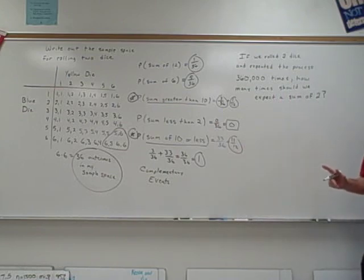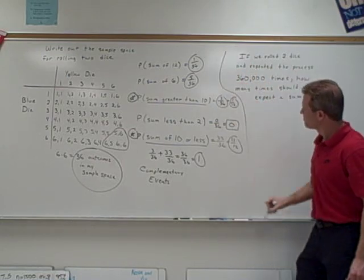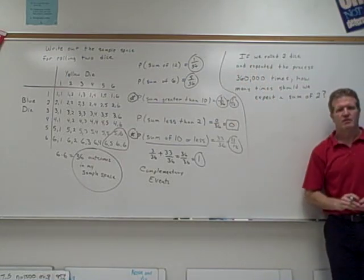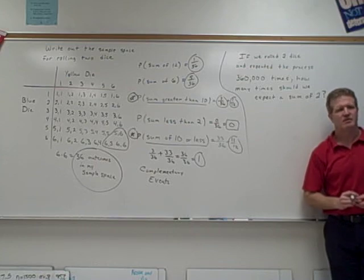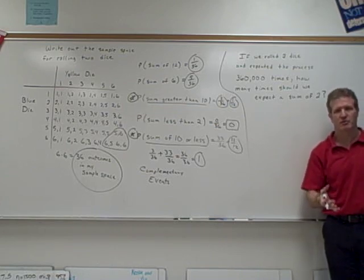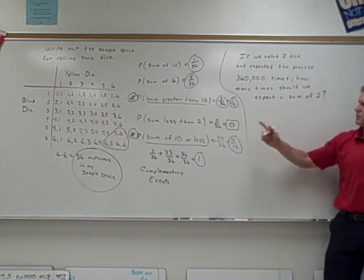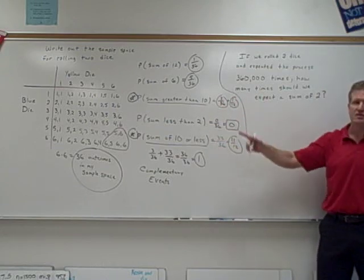All right. Last question I want to put on this video right here. If we rolled two dice and repeated the process 360,000 times, it would take you a long time with it. How many times should we expect to get a sum of two? Now, there's this law called the law of large numbers that says that when you get a large number of trials, the empirical or experimental probability will get close to the theoretical probability.